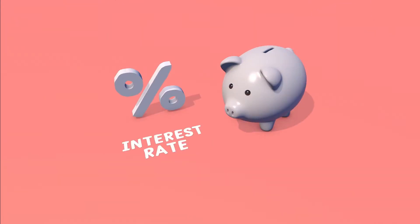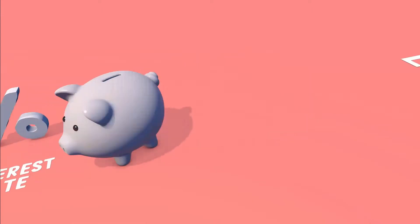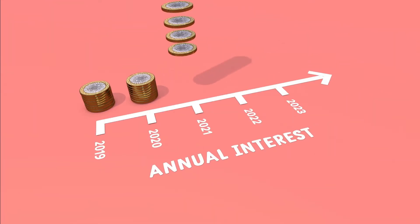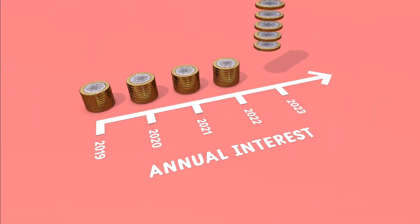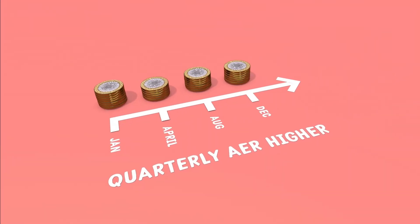AERs don't only reflect the interest rate of a savings account, for instance, but how often the interest is paid. Savers often receive interest annually, and when they do, the AER will be exactly the same as the quoted rate of interest. But if the interest is paid more frequently, say quarterly, then the AER will be a little higher.